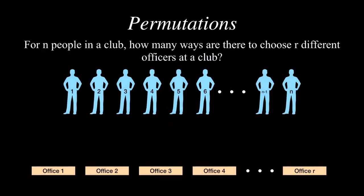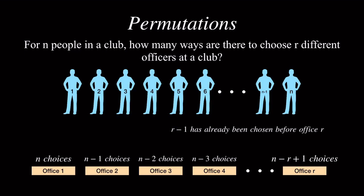In the general case, if we have n people in a club, how many ways are there to choose r different offices at a club, such that no member can hold more than one office? We know that there are n choices for the first office, n-1 choices for the second office as one person has already been chosen for office 1, n-2 for the third, n-3 for the fourth, and n-r plus 1 for the rth. Note that we add 1 because when we get to the rth office, r-1 offices has already been chosen, so we have n minus r minus 1, which is n-r plus 1.